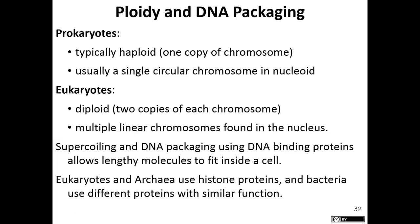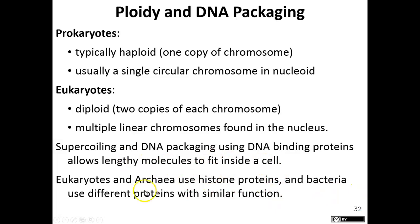Prokaryotic organisms typically have a circular chromosome found in the nucleoid, whereas eukaryotes have linear chromosomes found in the nucleus. Chromosomes are typically supercoiled and packed tightly with histone proteins. Eukaryotes and archaea use histones, while bacteria use a different protein with the same function — supercoiling the DNA so it fits in the nucleoid or nucleus.